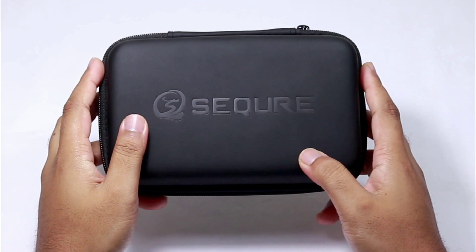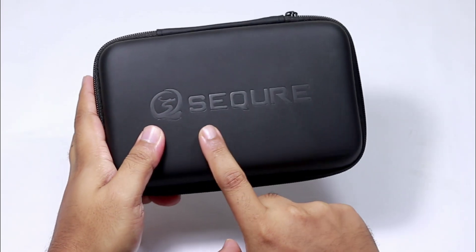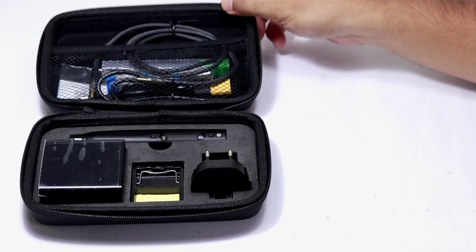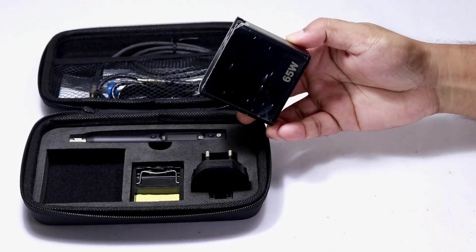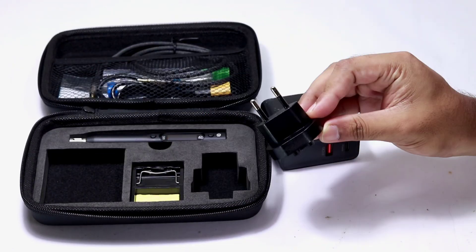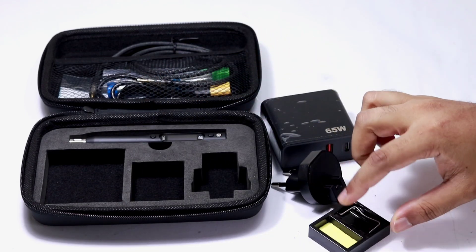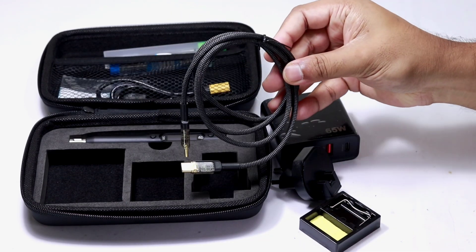I got myself this soldering iron kit from Secure. Now let's see what's inside the bag. We have got a power adapter, a converter for European plugs, mini soldering iron stand, and a USB type C cable.